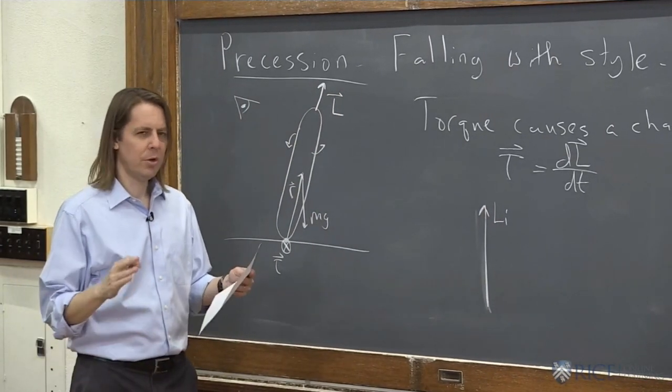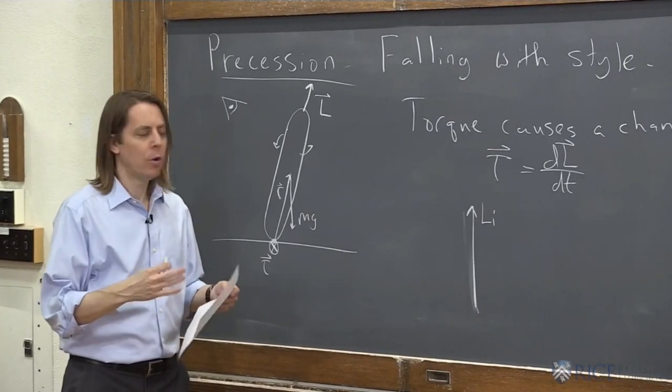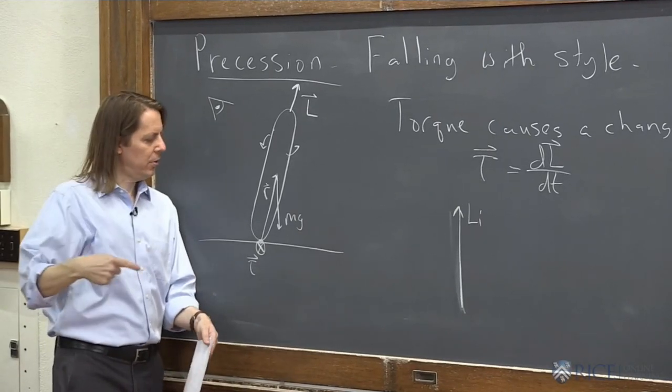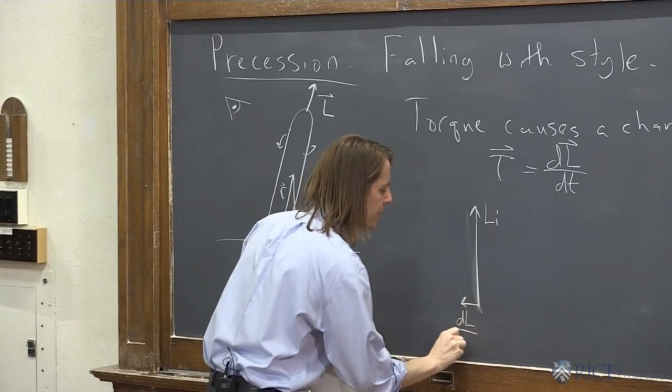And let's say in some small time dt, we create a little dL. Or we can just look at the vector dL/dt. If we look from here, down there's L, which way is the torque? It's this way, dL/dt. It's to the side, right?